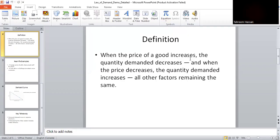When the price of a good increases, the quantity demanded decreases. And when the price decreases, the quantity demanded increases, all other factors remaining the same.